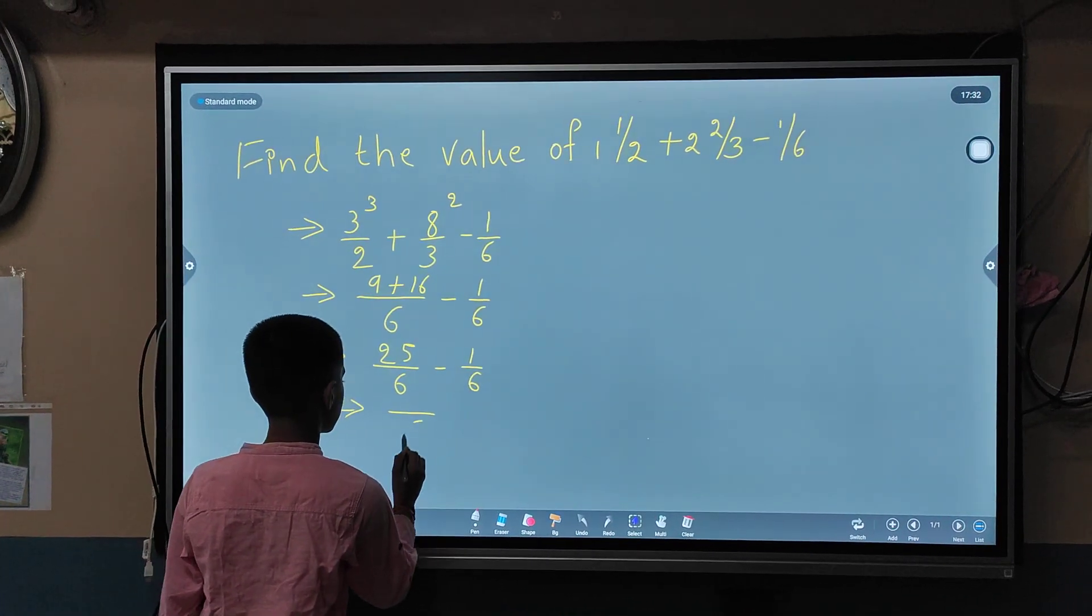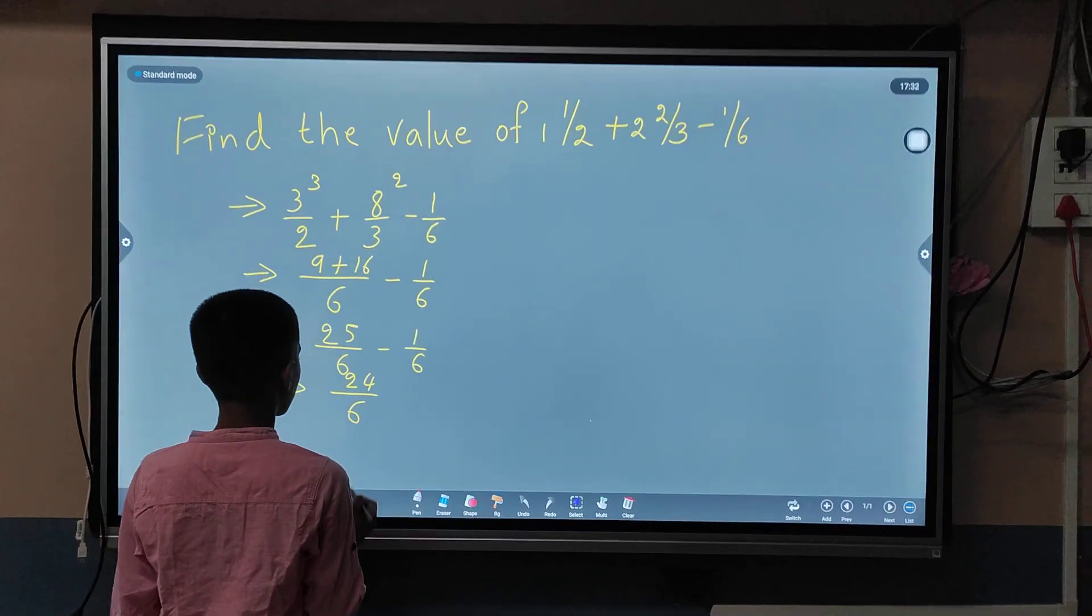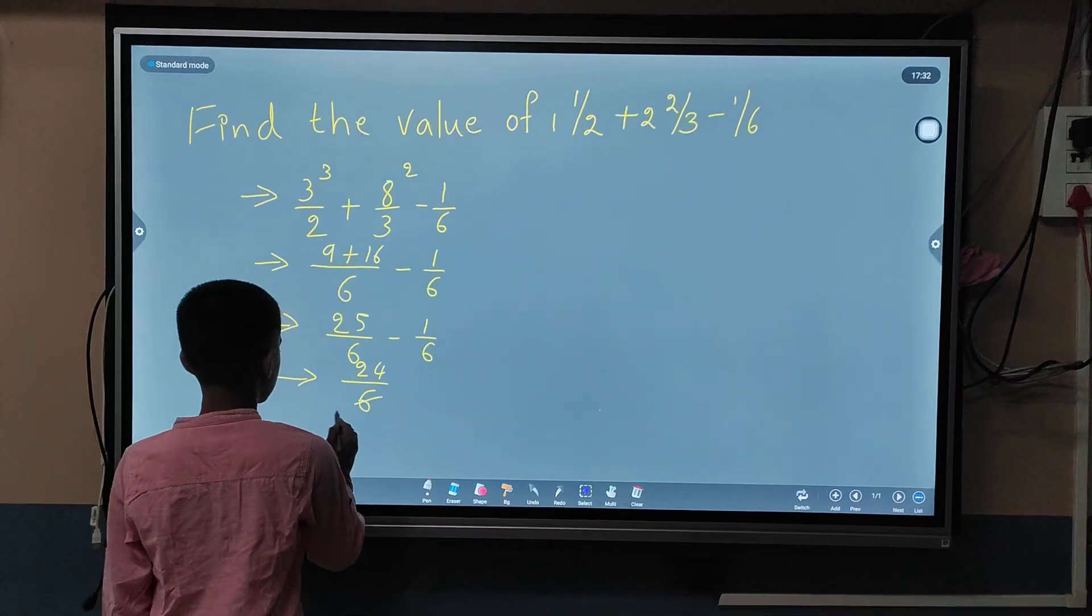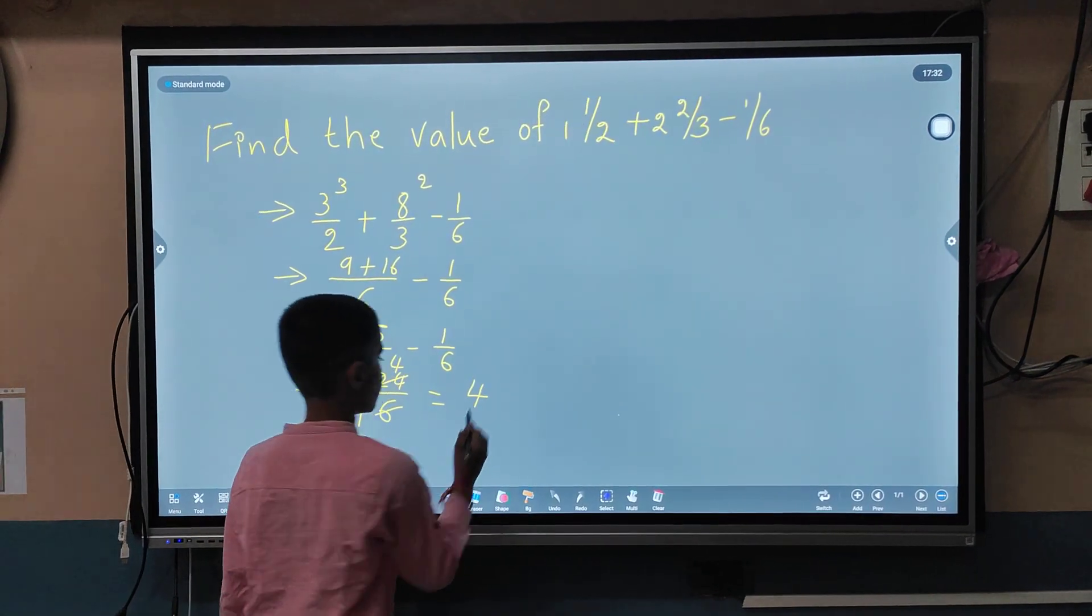The denominator 6 remains the same. 25 minus 1 equals 24. Now 24 and 6 can be simplified: 24 divided by 6 equals 4.